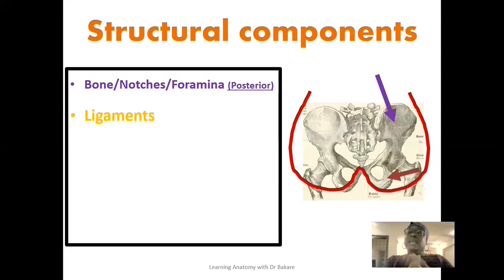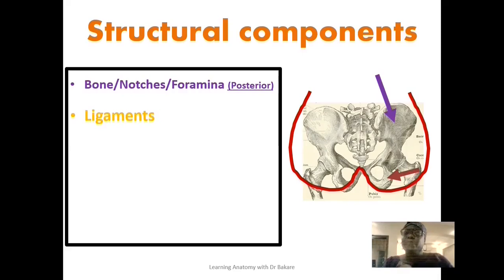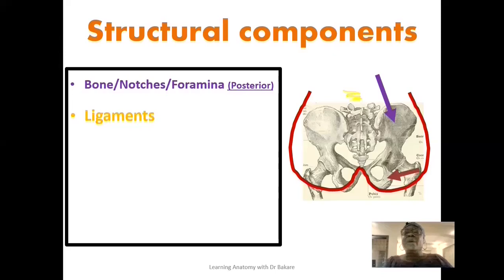Ligaments also contribute to the structural components of the gluteal region. Ligaments anchor the different bones at joints. The bony pelvis is made up of a number of bones that connect together at joints, and at those joints ligaments reinforce and structurally protect them. Around the posterior region of the bony pelvis, we have the posterior sacroiliac ligament, highlighted here in yellow, which reinforces the sacroiliac joint.